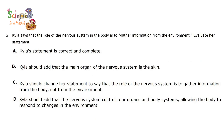Kyla says that the role of the nervous system in the body is to gather information from the environment. We need to evaluate her answer. This means Kyla says the importance of the nervous system is only to gather information from the environment. Is it only for gathering information? Let's see the choices to find out if her statement is correct and complete, or if she needs to add something.